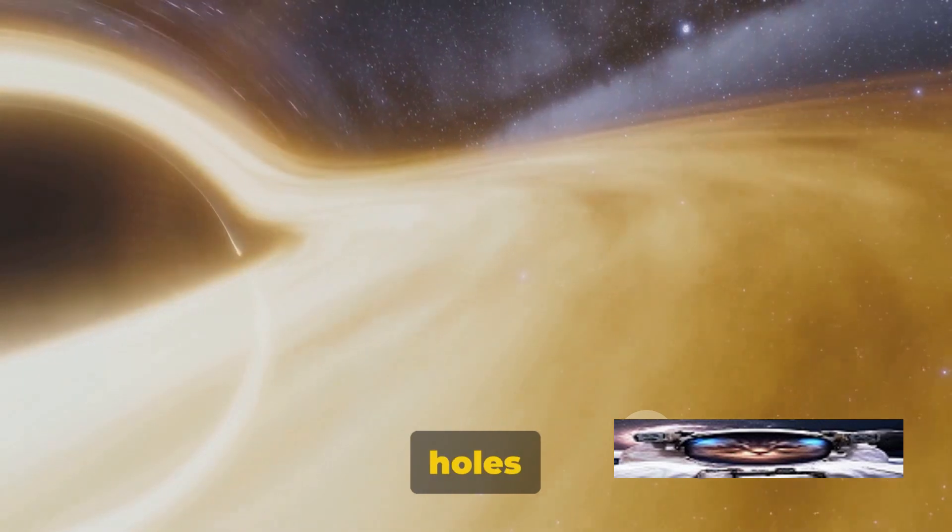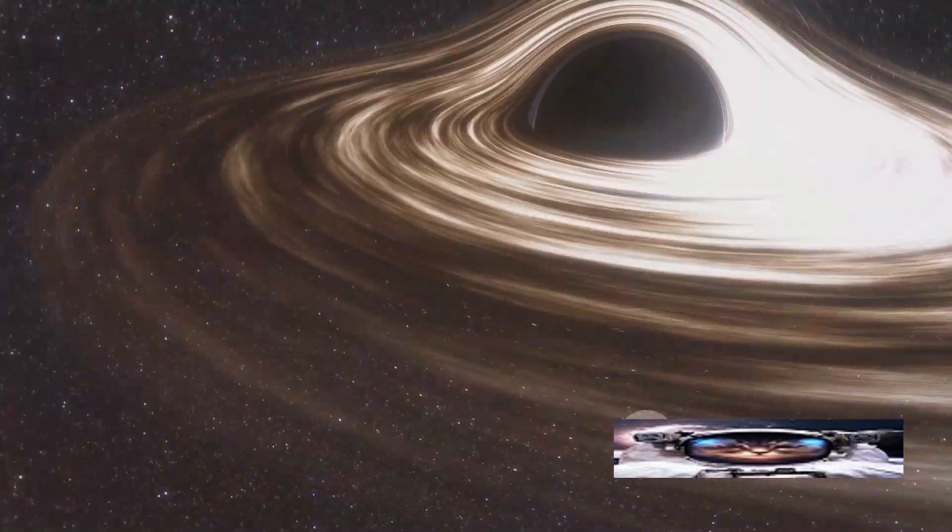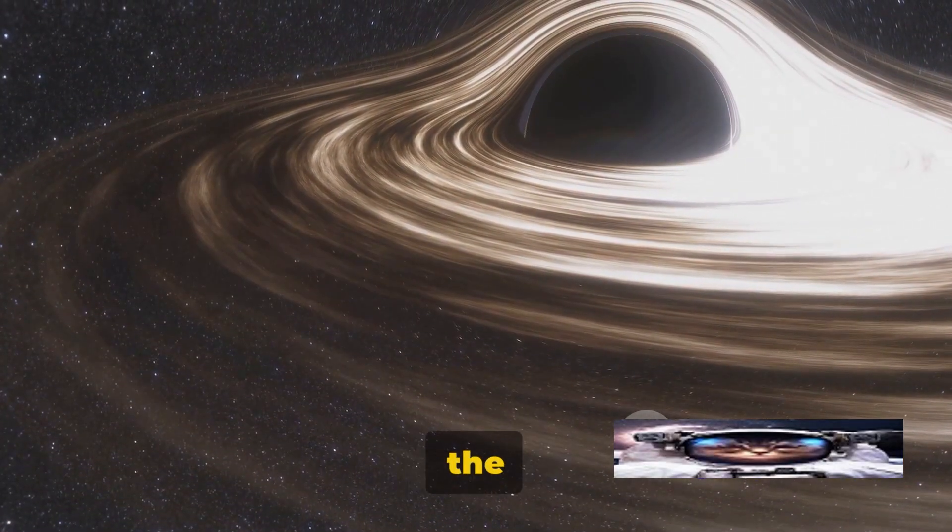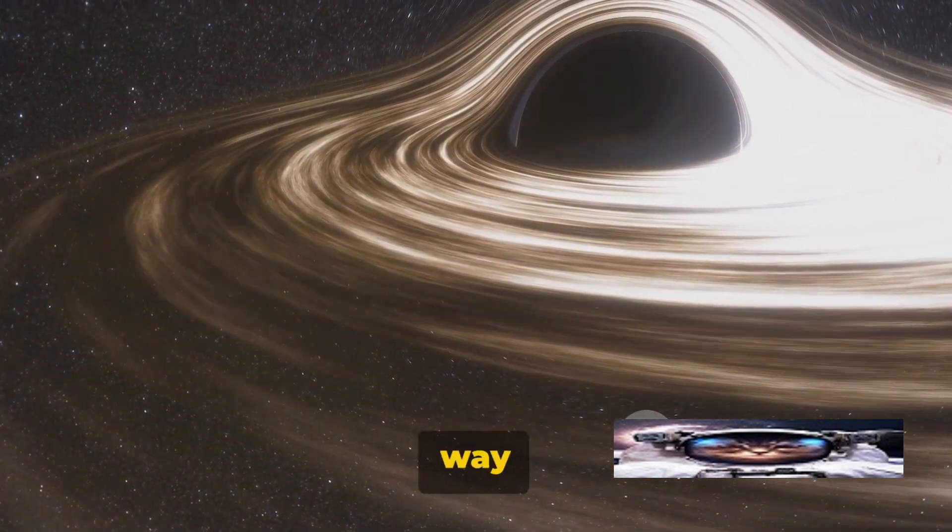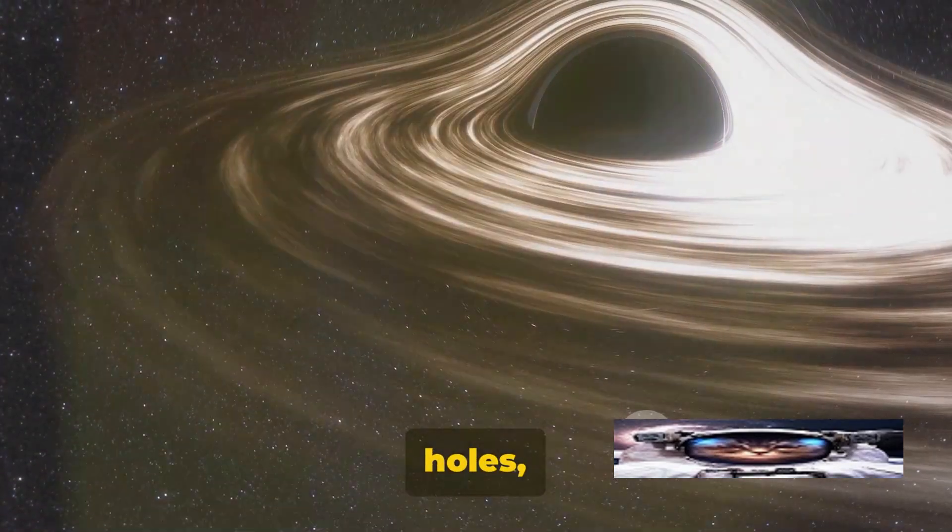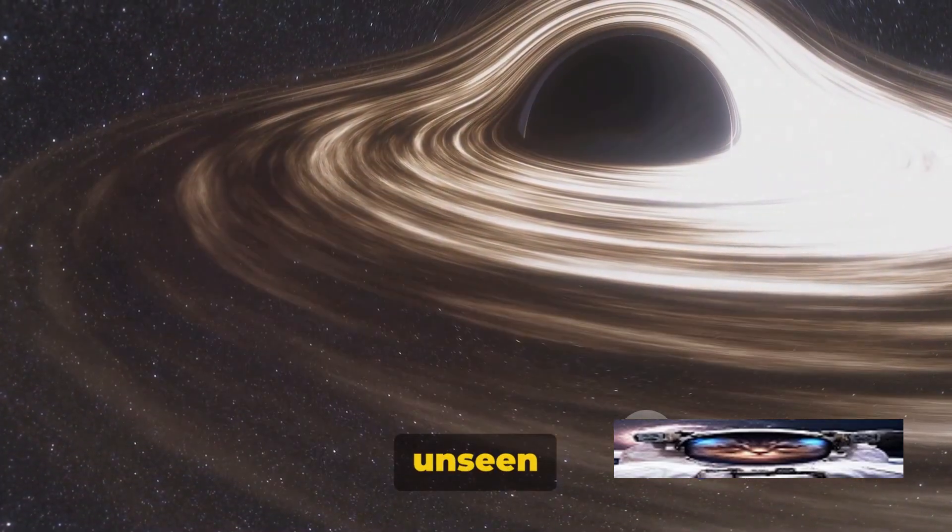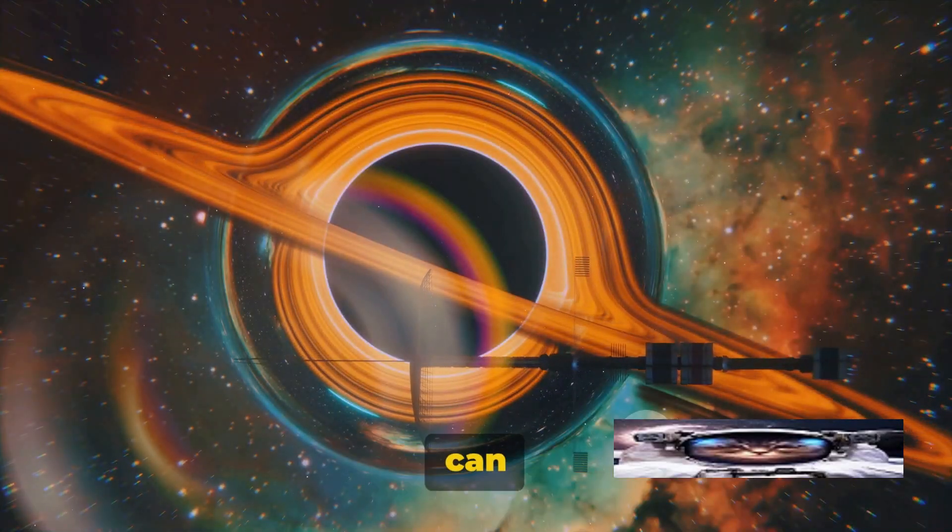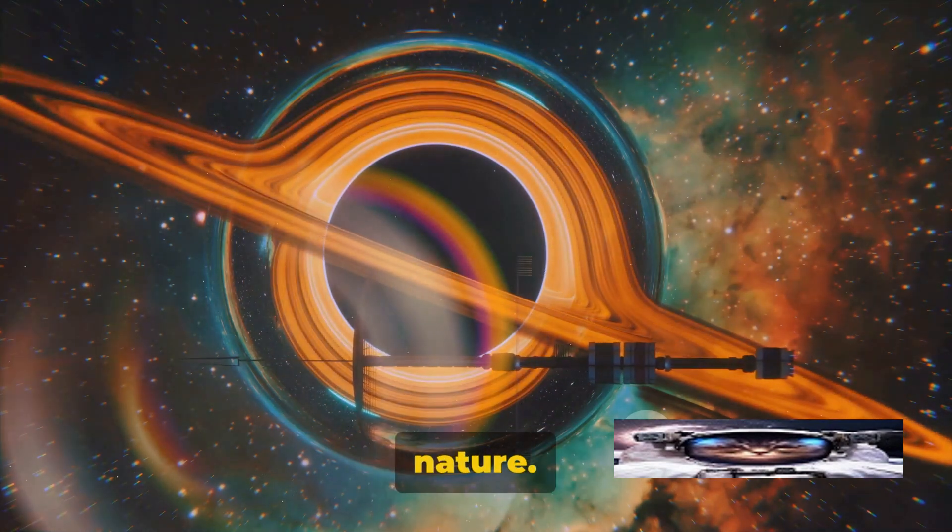The unyielding enigma of black holes is a tantalizing puzzle that's kept the scientific community on its toes. How do we study something we can't see? The answer lies not in what we see, but in what we observe. In the grand cosmic theater, black holes are the invisible puppeteers, their presence betrayed by the way they manipulate their celestial surroundings. Take the stars that orbit black holes, for instance. Their seemingly erratic movements are a telltale sign of an unseen gravitational powerhouse. By observing these celestial dances, scientists can estimate the mass and spin of the black hole, giving us insights into their mysterious nature.